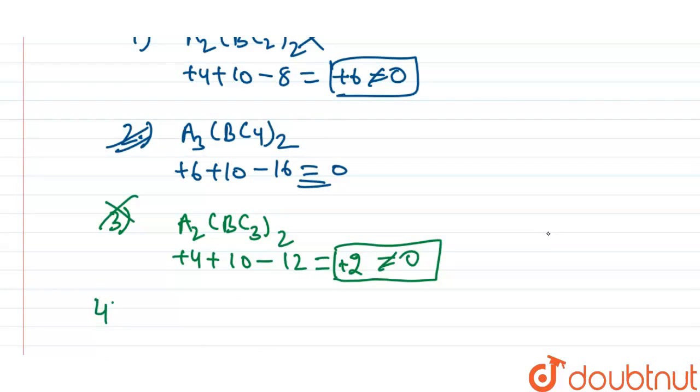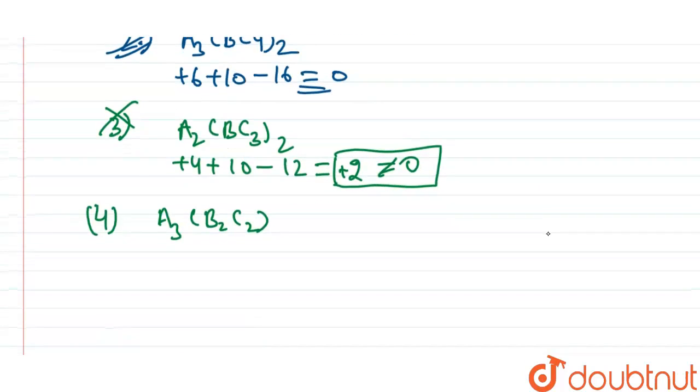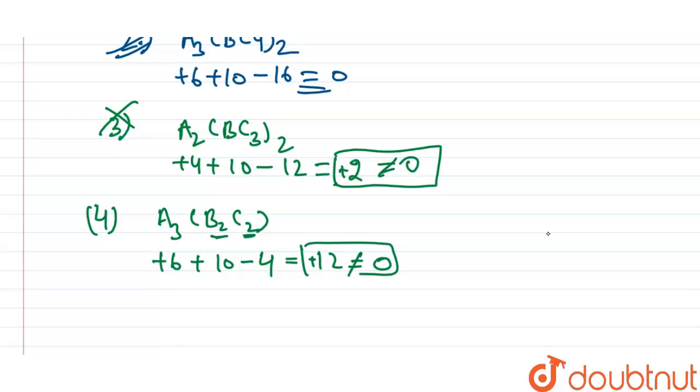Now in option number 4, that is A3B2C2. Here A3, so plus 2 into 3, that is plus 6, plus 5 into 2, that is plus 10, minus 2 into 2, that is minus 4, which gives 10 plus 6, 16 minus 4, that is plus 12, which is also not equal to 0. So this option is also incorrect.